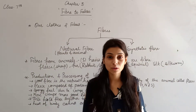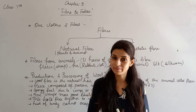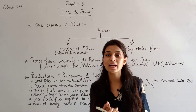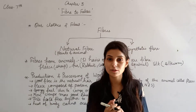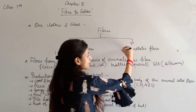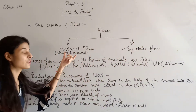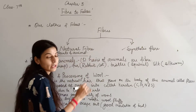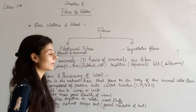Whatever clothes we wear, where do they come from? Fiber to Fabric. Fiber is mainly obtained by two methods: that is Natural Fiber and Synthetic Fiber. Natural fiber is obtained from plants and animals.